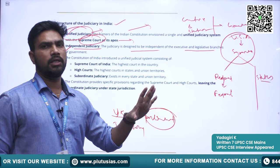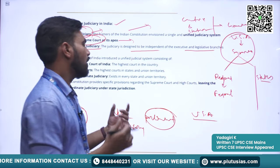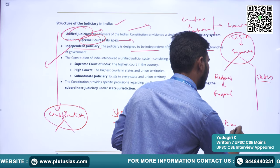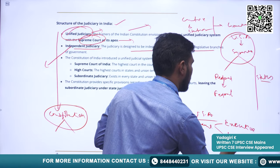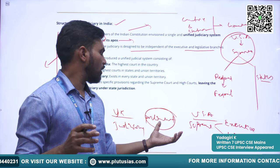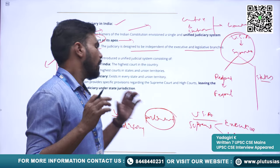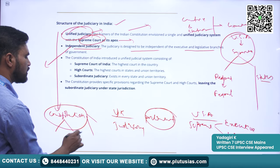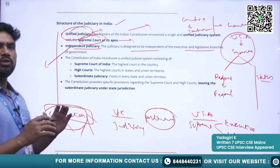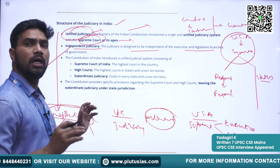In India, the judiciary is controlled only by the Constitution, not by the executive or legislature. In the USA, the judiciary has assumed a lot of power over time and has become supreme — it can pass judgments against the executive and even the legislature (Senate). In India, the balance between the three organs of government — Executive, Judiciary, and Legislature — is still being maintained because the Constitution distributes and balances powers among the three organs.